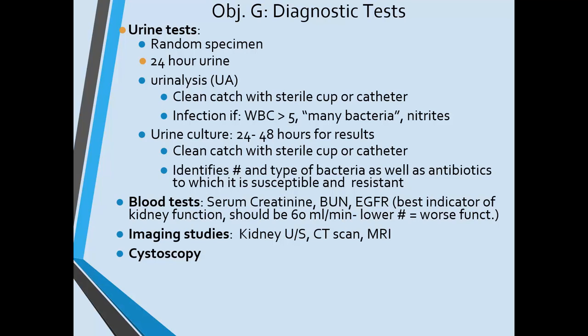A random urine specimen doesn't have to be sterile but should not be contaminated with stool or toilet paper — this could be used for a toxicology screen, for example. A 24-hour urine sample is started after the first void; subsequent urine is collected for 24 hours, and the patient empties their bladder at the end of the time frame as well. It's kept on ice throughout collection for freshness, and is used for kidney function tests that fluctuate over 24 hours. Urinalysis and urine culture check for infection; white cells, nitrites, and bacteria in the urine indicate infection. Blood tests determine kidney function, and imaging studies can detect kidney stones, tumors, or obstructions.